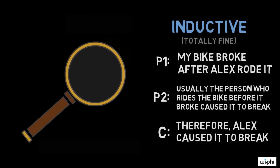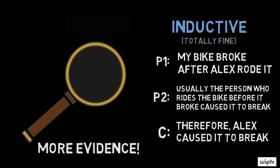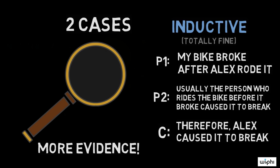But this argument is now inductive, which is fine. However, it shows us that we need more evidence that Alex broke my bike in order to conclude that he broke it, as opposed to the bike just breaking no matter what. So, let's consider two cases with more or less evidence.